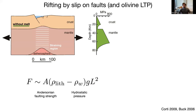There are two end-members for how continents can rift. One is tectonic rifting, where we assume magmatism is not relevant, and we look at rifting by slip on faults and by olivine low-temperature plasticity, which creates shear zones that behave somewhat like faults.